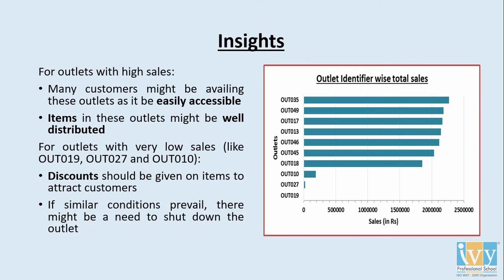Looking at the outlets which are doing well, these outlets may be easily accessible and items might be well distributed. For outlets not doing well, like outlet 19, offers and discounts must be given to attract customers. If similar conditions prevail, then there may be a need to shut down the outlet.